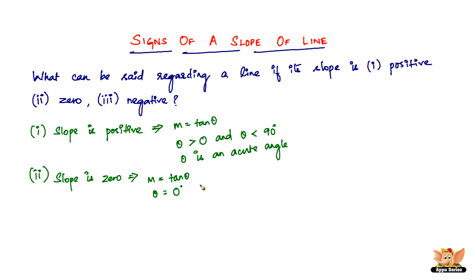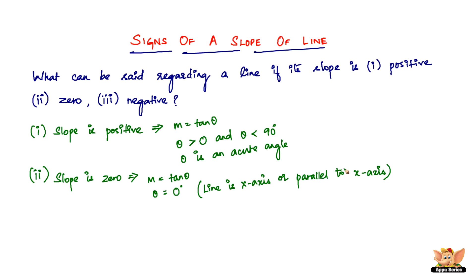If theta is 0 degrees, it means the line is coinciding with the x-axis, or the line itself is the x-axis, or the line is parallel to the x-axis. That is what it means when the slope of a given line is 0.